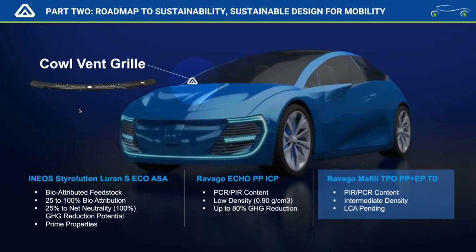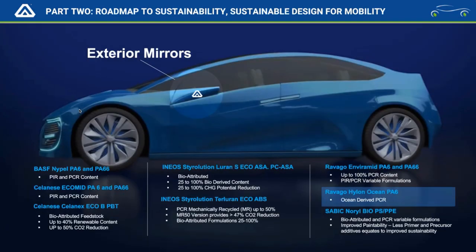The Ravago Mofill TPO typically includes 10–30% talc fill, creating an intermediate density solution around 1.10 g/cm³ — versus 1.15–1.20 for ASA or 0.90 g/cm³ for unfilled polypropylene. The polypropylene has the lowest density but lacks the stiffness and impact resistance you may need, which is why we look at this intermediate design with Mofill. Life cycle analysis is pending on these products, but depending on your choices you can range from 25% to 80% carbon reduction.